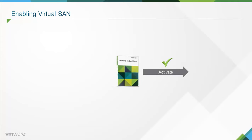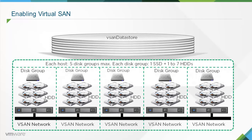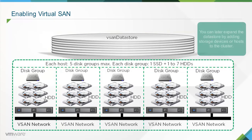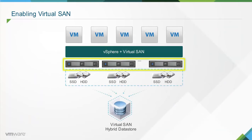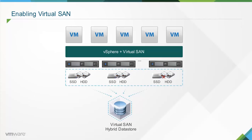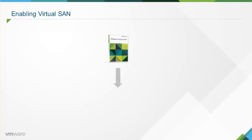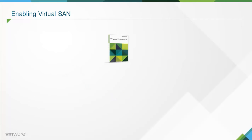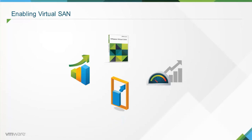You can activate Virtual SAN while creating a host cluster, or enable it on existing clusters. When enabled, Virtual SAN aggregates all local storage disks available on each host into a single data store shared by all hosts. You can later expand the data store by adding storage devices or hosts to the cluster. Though hosts in the Virtual SAN cluster need not be identical, using identical hosts is recommended for optimum results. Hosts without local disks can also participate and run their virtual machines on the Virtual SAN data store. Virtual SAN uses a policy-based approach to storage management, delivering enhanced performance, scalability, and resilience, though a minimum of 10% CPU overhead is generally imposed per host.